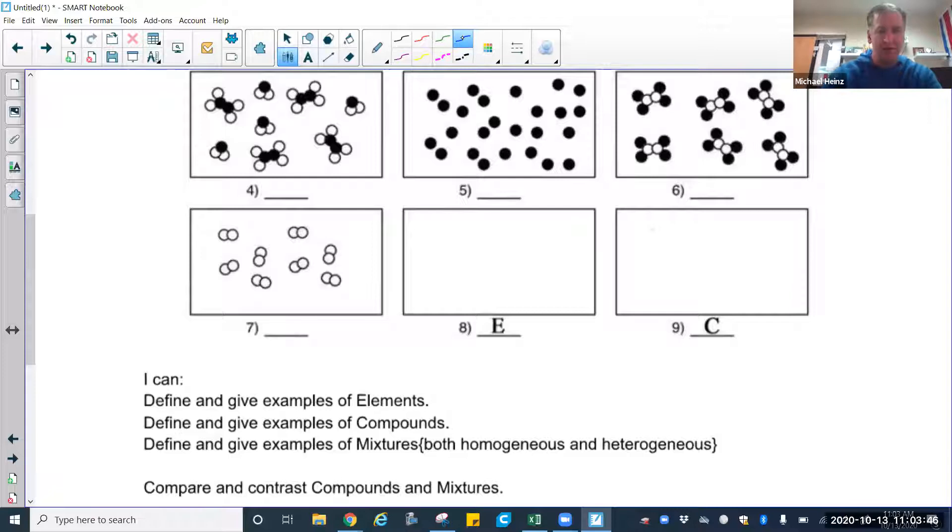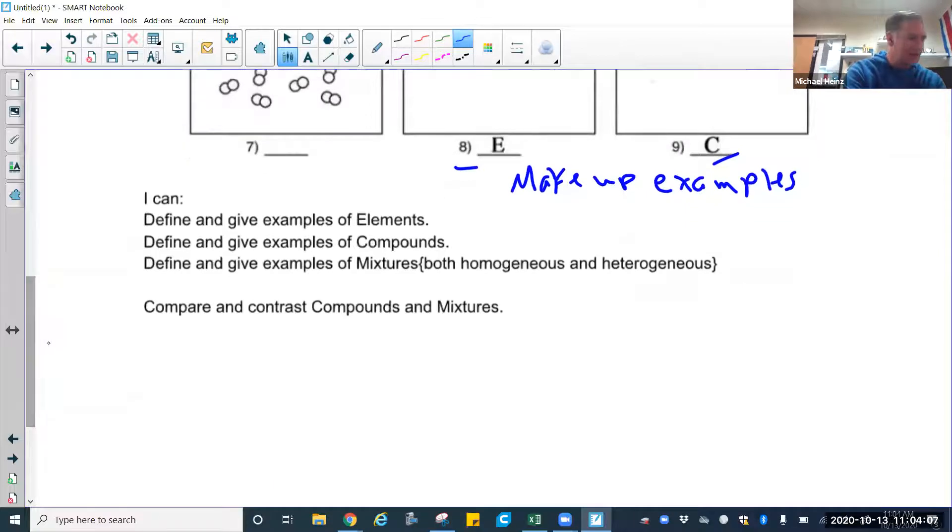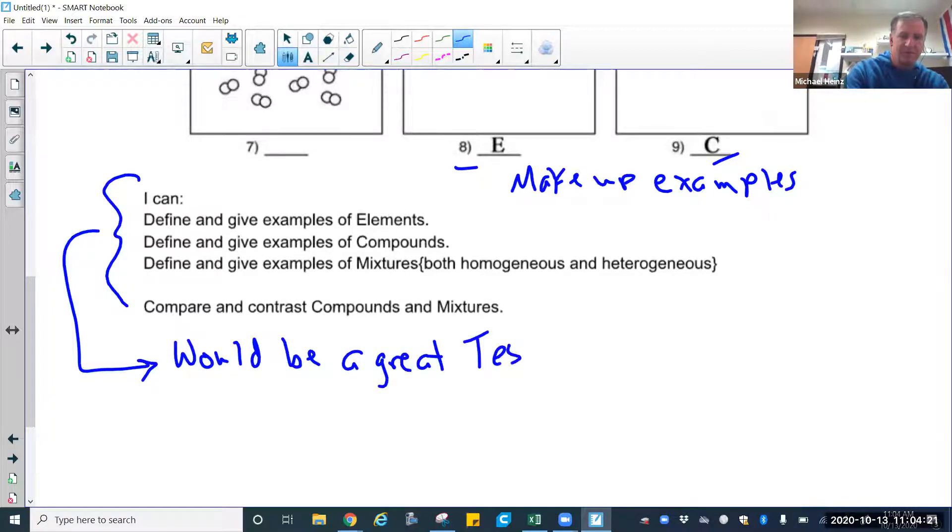As I put on the review packet, eight and nine - make up your own examples. Use whatever shape you want to try to get straight in your own brain what would constitute an element in number eight and a compound in number nine. Don't use the ones up above. Make up your own. And then this, I'm just going to tell you right now - hint, hint, big hint coming. Spoiler alert. This would be a great test question. Just saying. I'm just saying that would be a great test question.